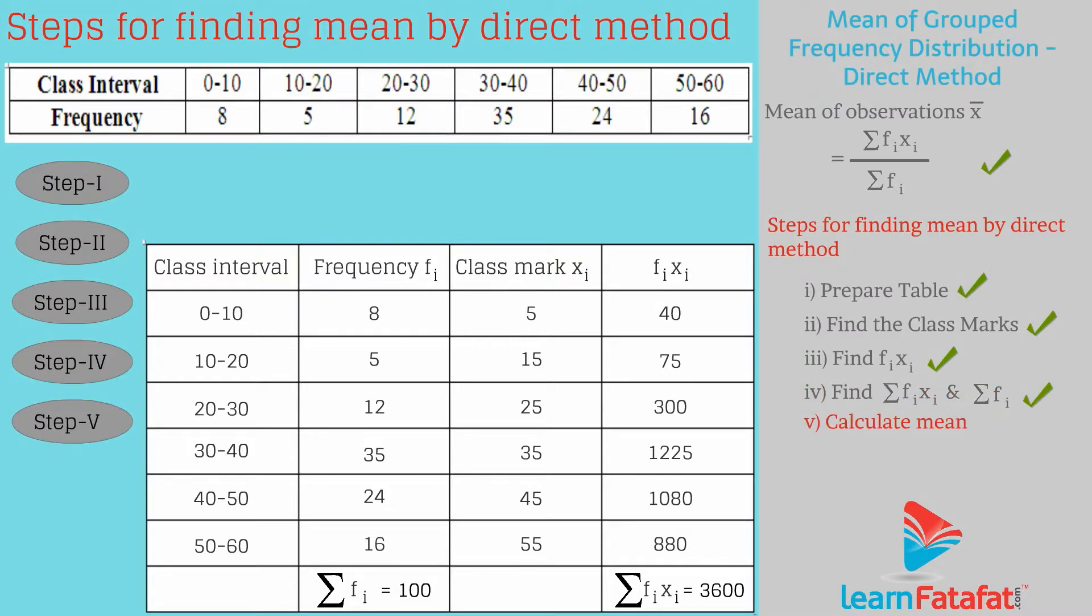Step 5: Calculate mean. Mean is calculated as summation of fixi divided by summation of fi. Thus mean is 3600 divided by 100, that is, mean is equal to 36.